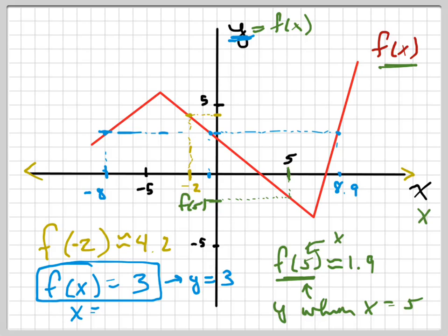What is x equal? If f of x equals 3, what is x? Well, there's three answers: negative 8, or negative 1 half, or 8.9. This point right here is 8.9 comma 3. This point right here is negative 1 half comma 3. And this point right here is negative 8 comma 3.